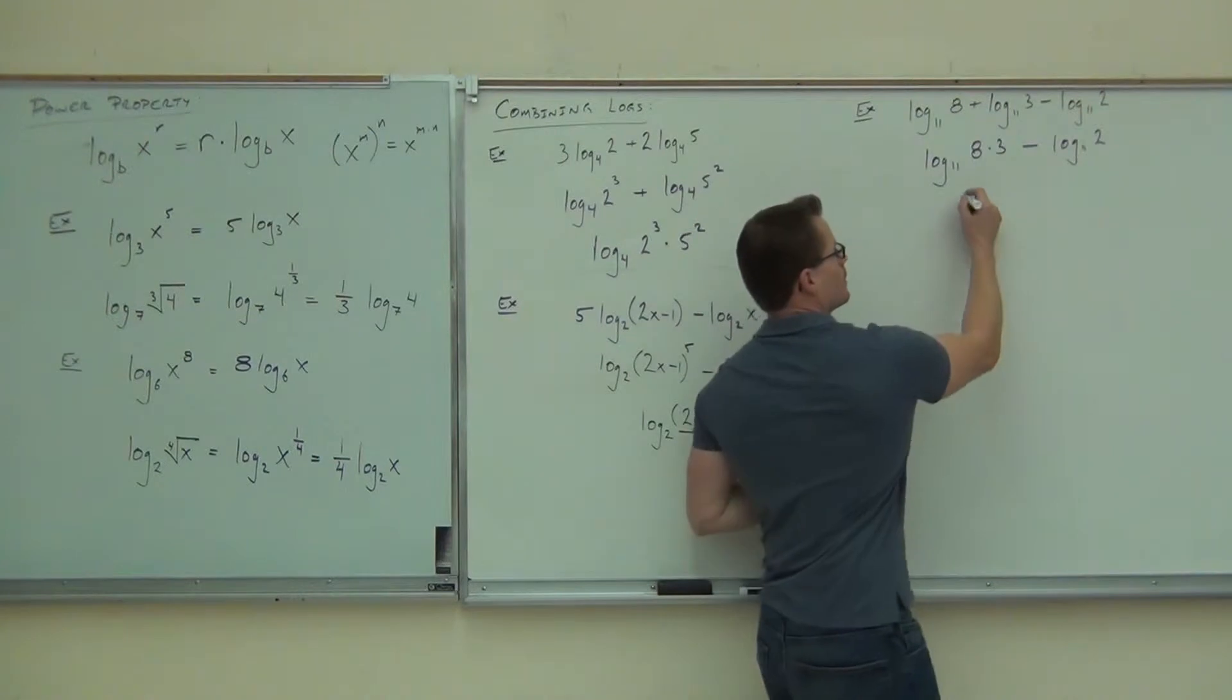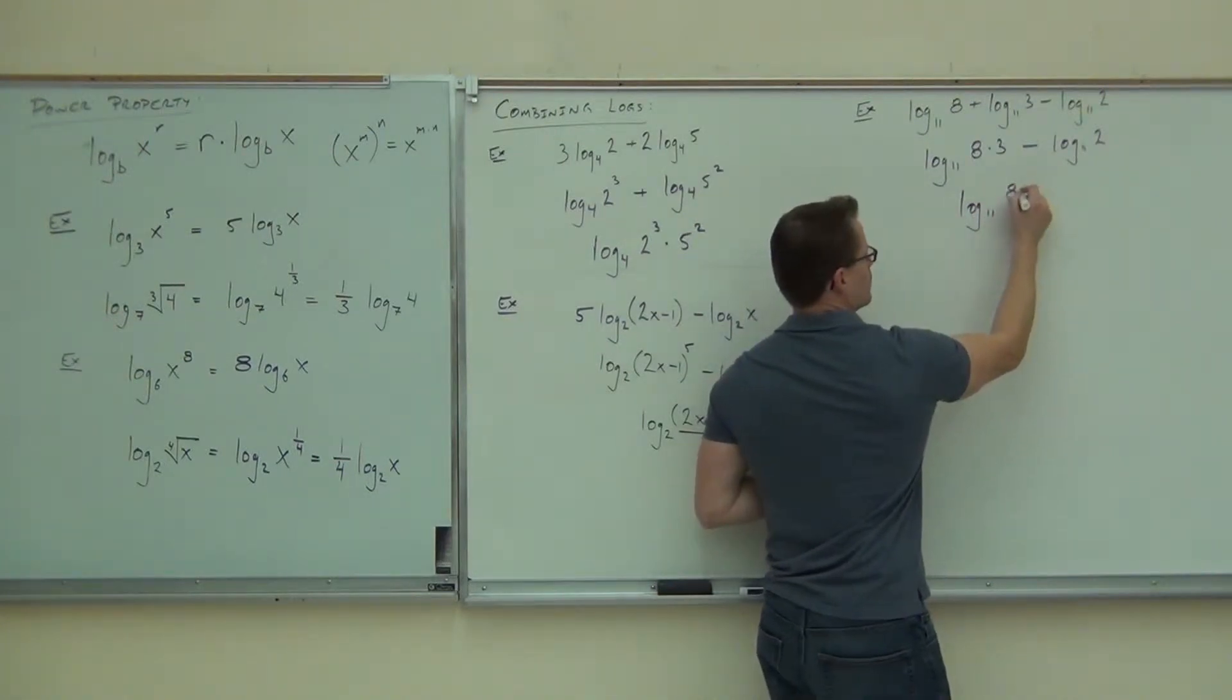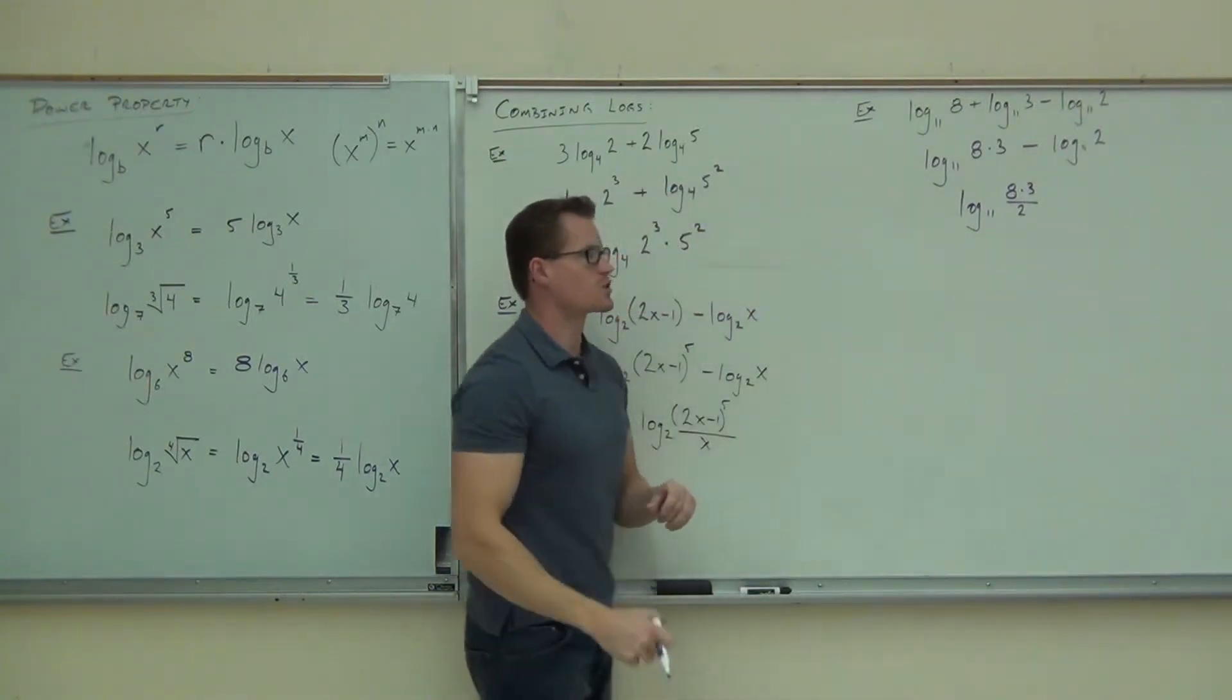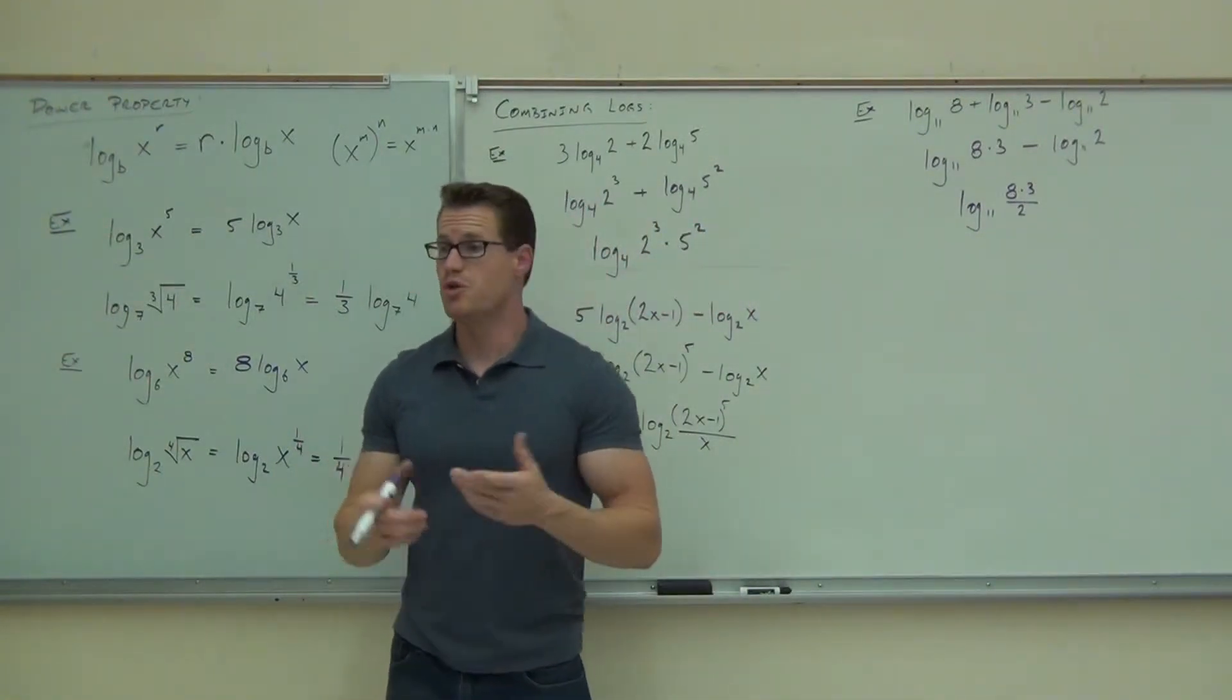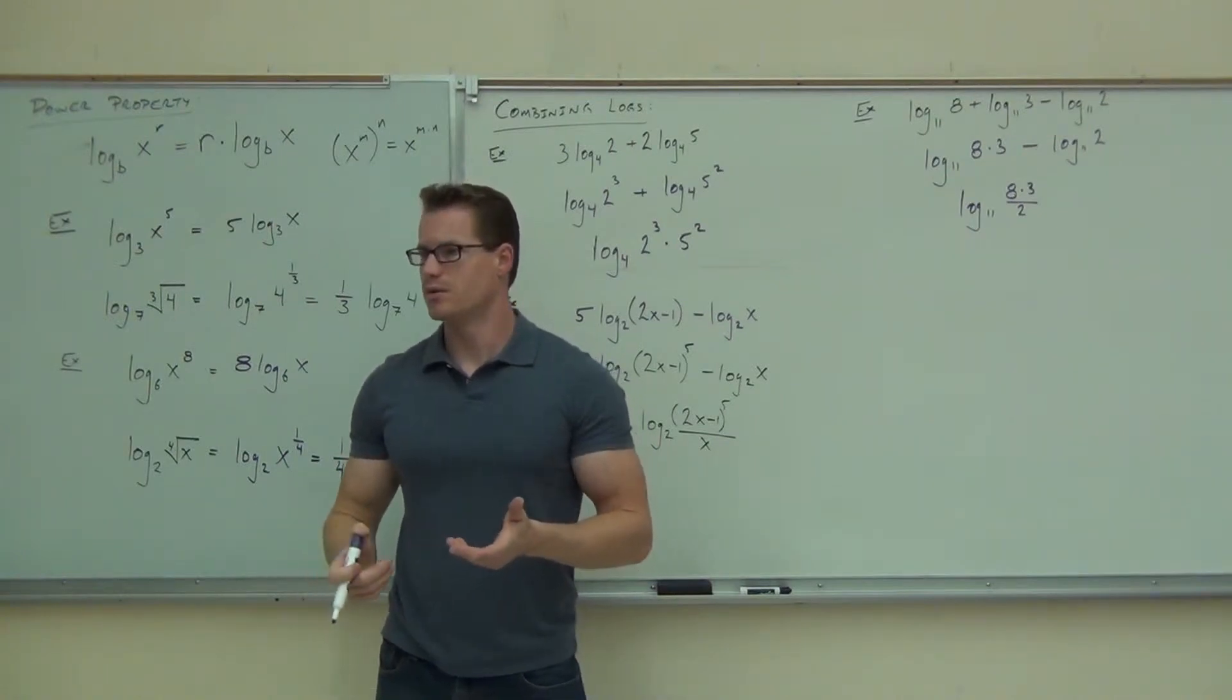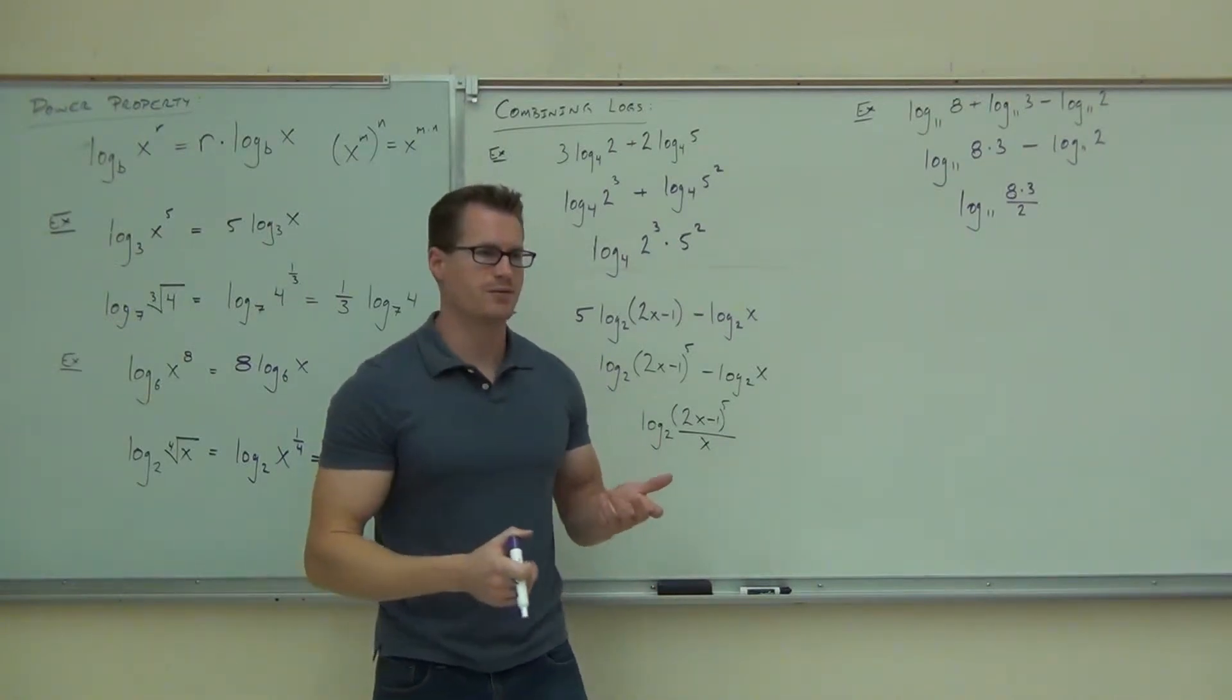All over 2. Great, because now I have log base 11, log base 11. They're being subtracted. Log base 11 of 8 times 3 over 2. Of course, could you do the math on that? Sure. You're going to get, what, 12? You're going to get 12 out of that. Log base 11 of 12.